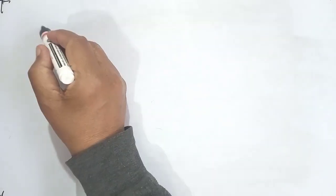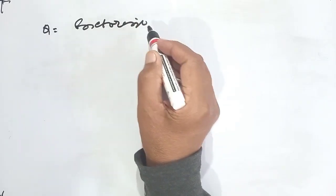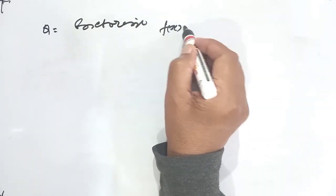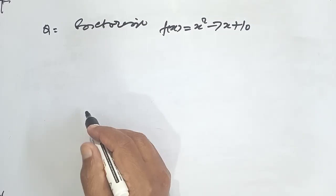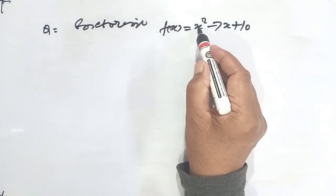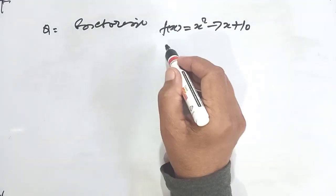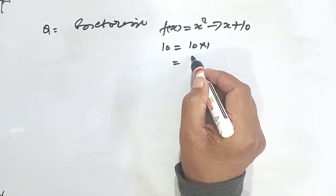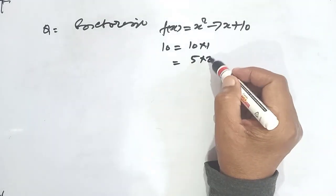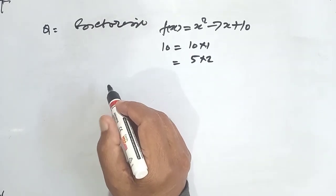Now we take up the Horner's method. The next question is: factorize using Horner's method f(x) = x² - 7x + 10. Here, the coefficient of x² is 1 and the constant term is 10. According to Horner's synthetic method, 10 can be expressed as 10×1 or 5×2, so 1, 2, 5, and 10 are the four numbers that can be tried.